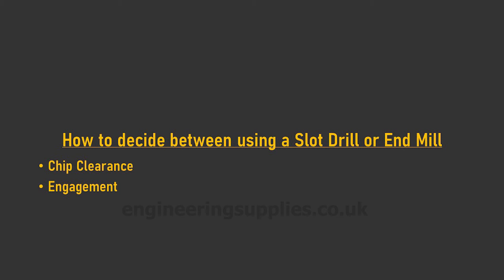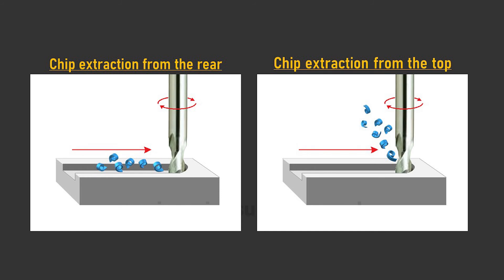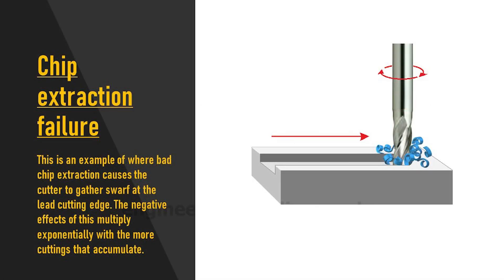An end mill has a longer flute length than a slot drill for several reasons. The main being chip clearance, and secondly engagement. Where you are cutting a slot, the cuttings need to go somewhere — generally out the back or coming out the top of the spiral flutes. The fewer flutes you have, the better the chip extraction will be, as the flutes of the cutter will invariably be deeper. If your chip extraction isn't good, the cuttings, or swarf, can gum up in the cutter flutes or in the slot. This can cause all sorts of problems, ranging from poor surface finish, cutting oversize, and tool breakage.